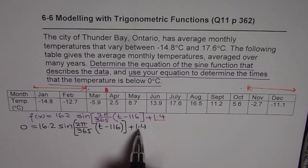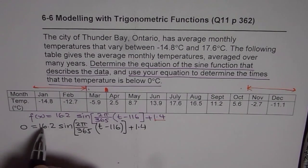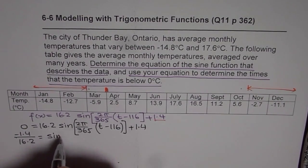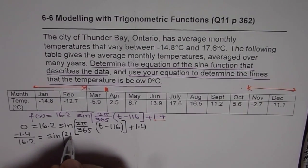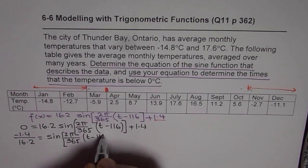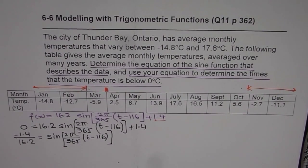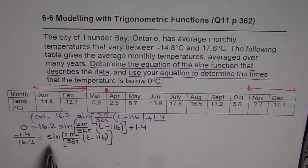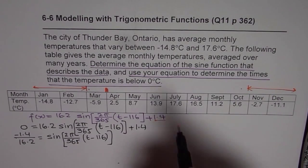To solve this, we will take 1.4 on the left side, divide by 16.2. So we get minus 1.4 divided by 16.2 will be equals to sine of 2 pi by 365 t minus 116. Now, let's use the calculator to find this answer. But before we get there, what we can also do is think about it like this. This is negative.